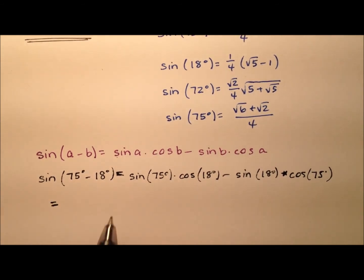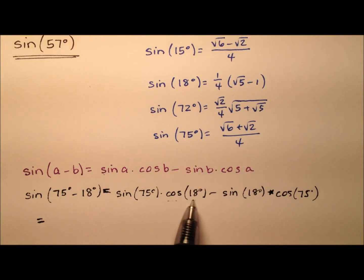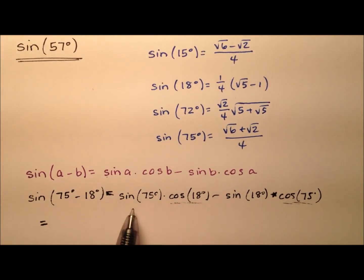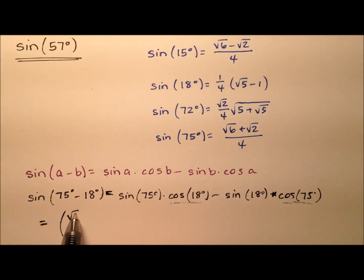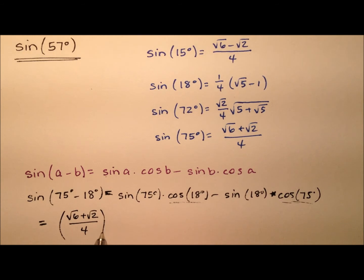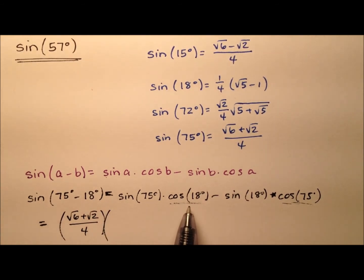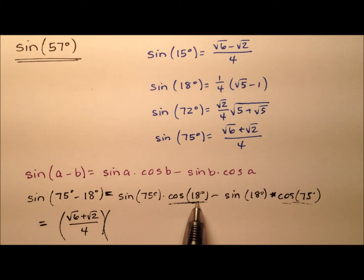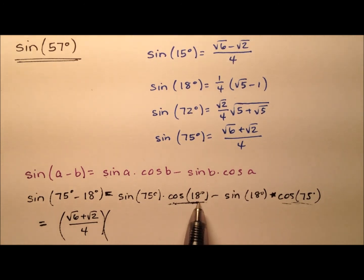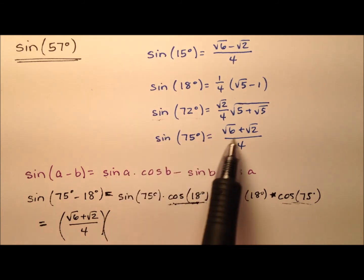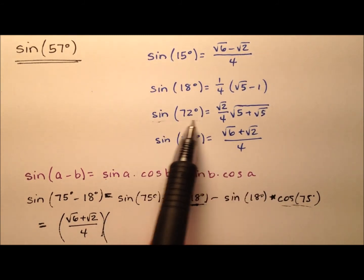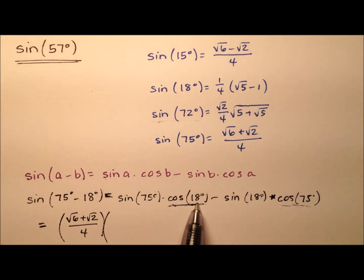When we substitute these values in, you'll notice I have cosines here and not all sines — we'll talk about that. The first one is the sine of 75 degrees, which is the square root of six plus the square root of two, all over four, and I'm going to multiply that by the cosine of 18 degrees. Sine and cosine have a nice relationship where the cosine of an angle equals the sine of its complement. So instead of cosine of 18, I can use the sine of 72, since 90 minus 18 is 72. We're switching these cosines to sines because those are specifically the videos I worked out and solved.